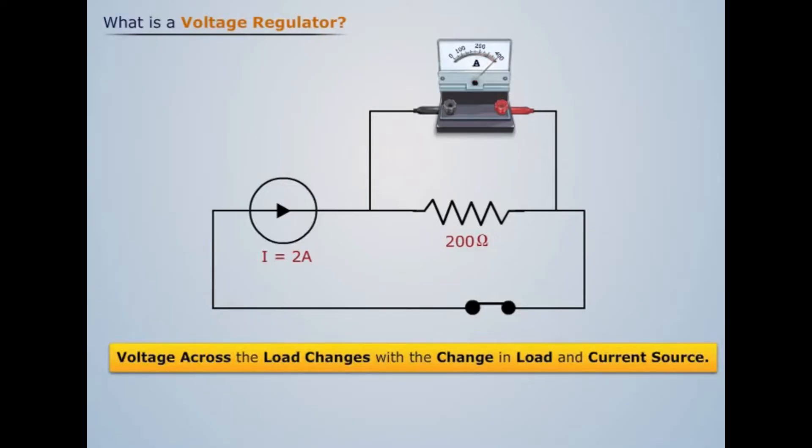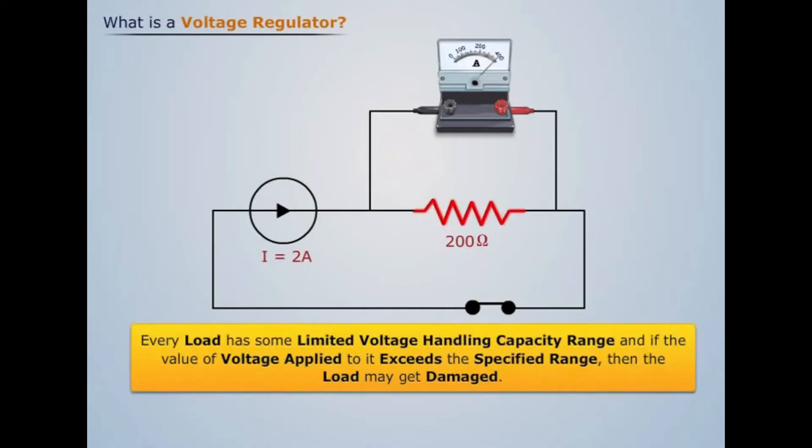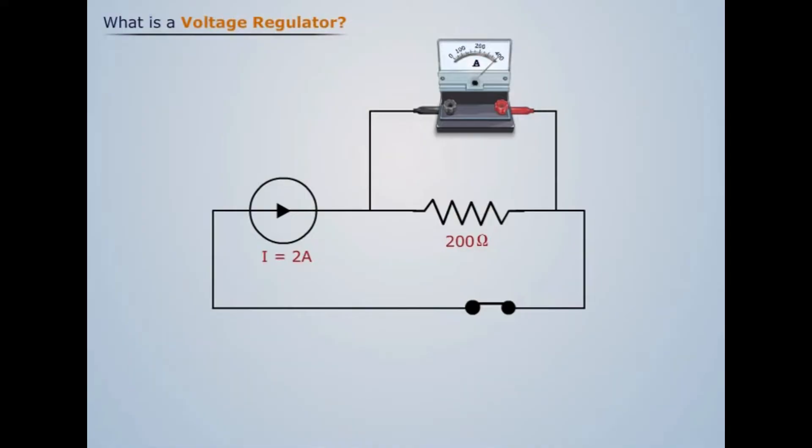Therefore, we can conclude that voltage across the load changes with a change in load and current source. But since every load has some limited voltage handling capacity range, and if the value of voltage applied to it exceeds the specified range, then the load may get damaged.